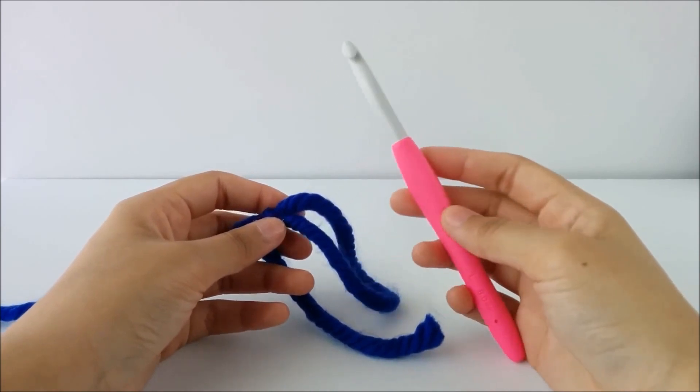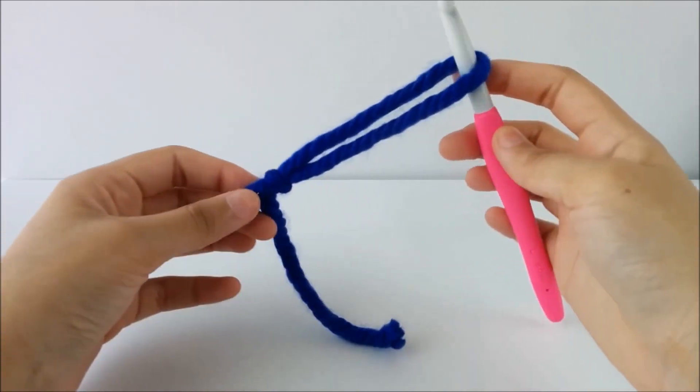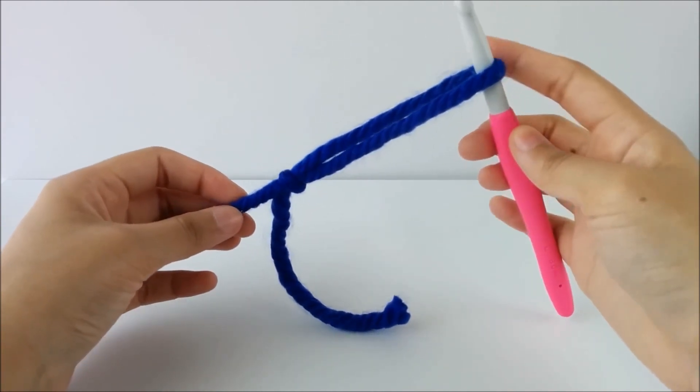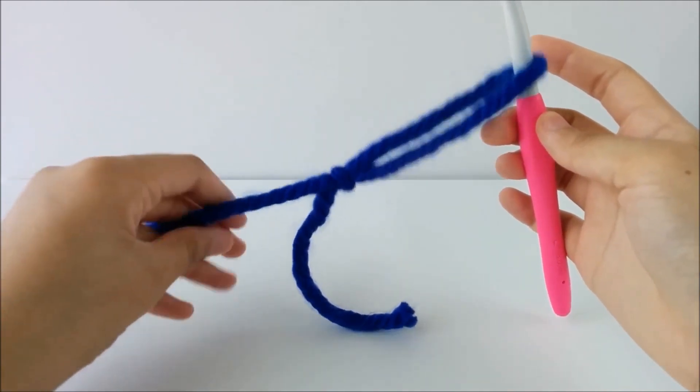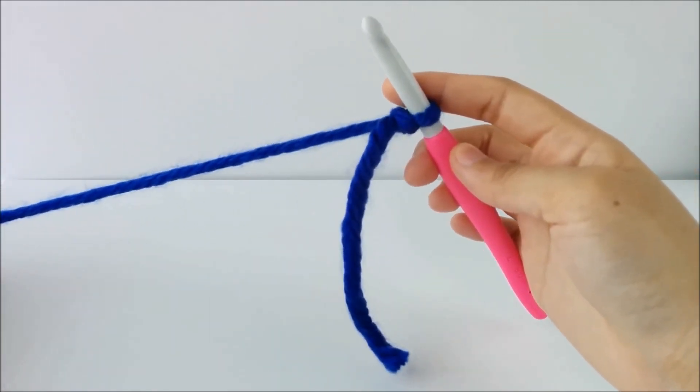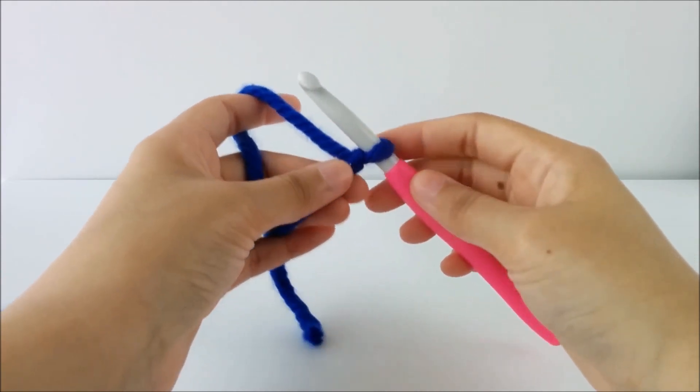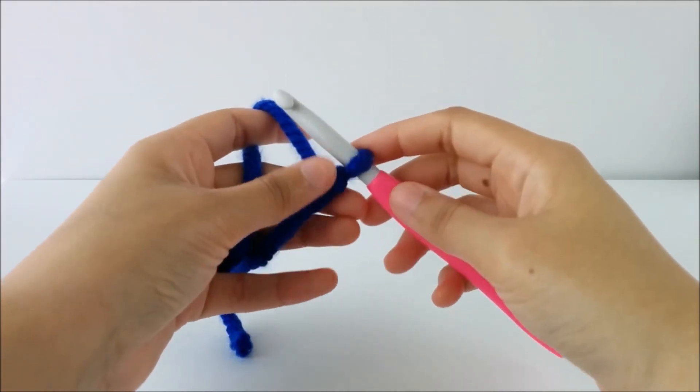So now you take your hook and we're going to start the actual foundation chain. So right now my loop is really big compared to my hook size. So I'm just going to pull on the working yarn and pull it so it gets snug up to the hook. You don't want it to be too tight, but you do want it to be snug. You want it to stay where it is.